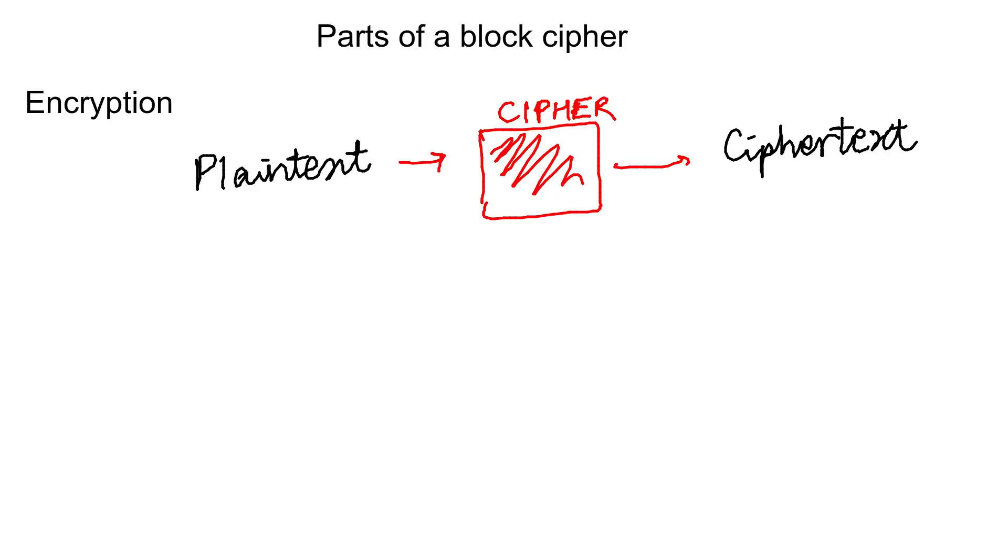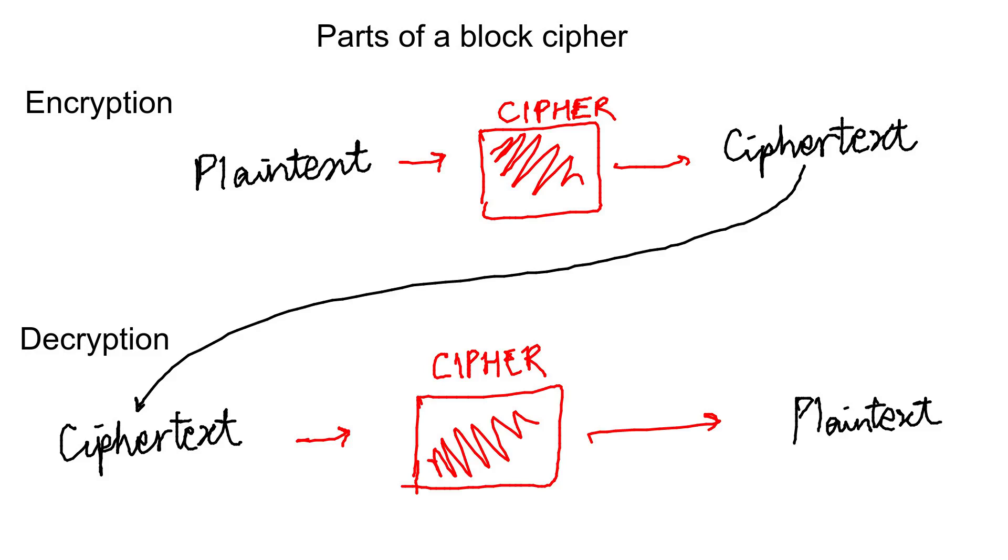Now, block ciphers are divided into two parts. First, the encryption algorithm, which as you can guess produces the ciphertext. And secondly, the decryption algorithm, which decrypts the ciphertext and produces its corresponding plaintext.